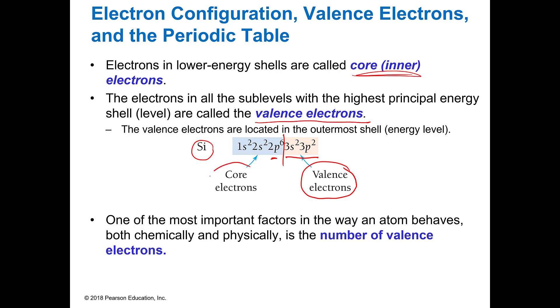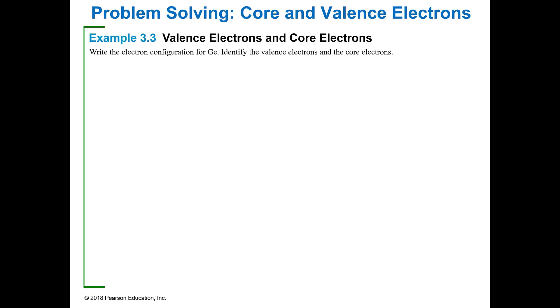You've got core electrons and remember these are the ones that are going to be shielding the nucleus, and then you have the valence electrons which could be actually active and doing something in a reaction. So one of the most important factors in how it's going to behave is how many valence electrons it has.